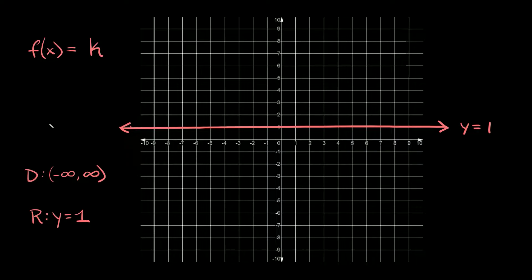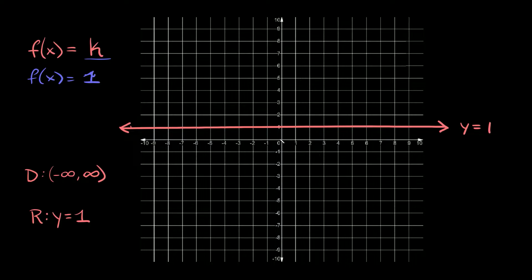The first is the constant parent function. It's called the constant function because it's represented by literally just a constant, just a number. In this case the graph is just a straight line that goes through one, so f of x is equal to one. This is one of the most basic functions we can graph because it's literally just a straight line.